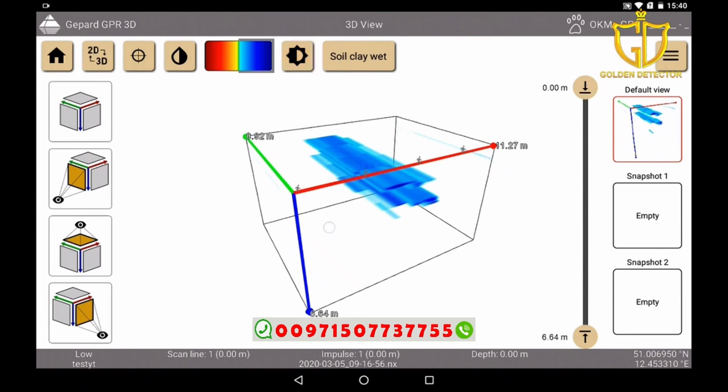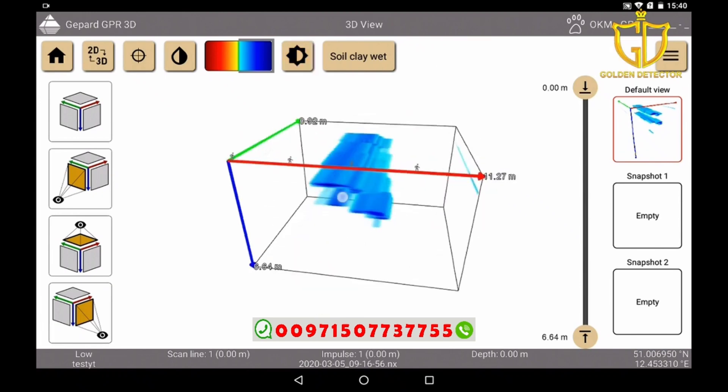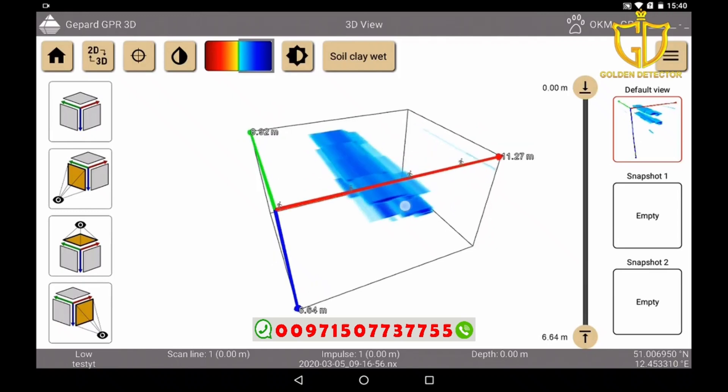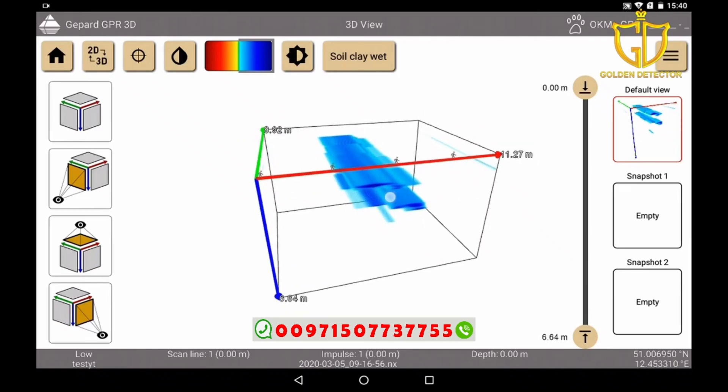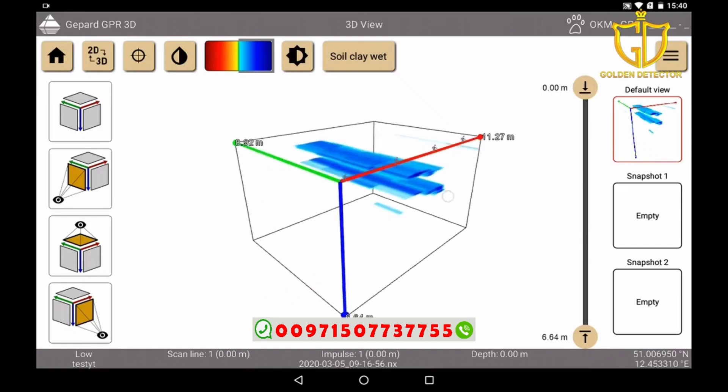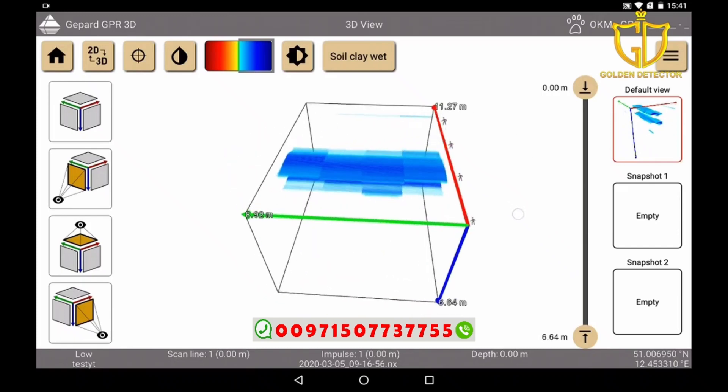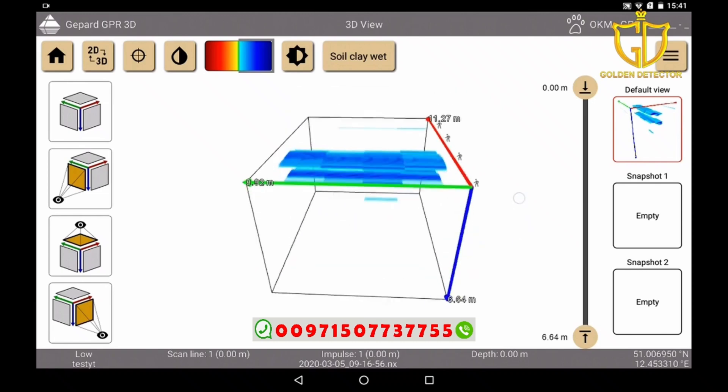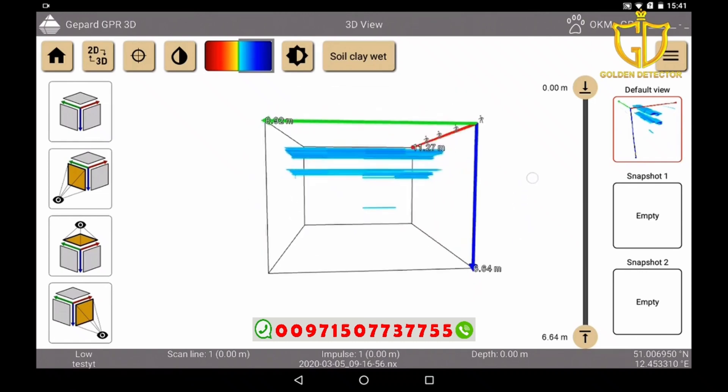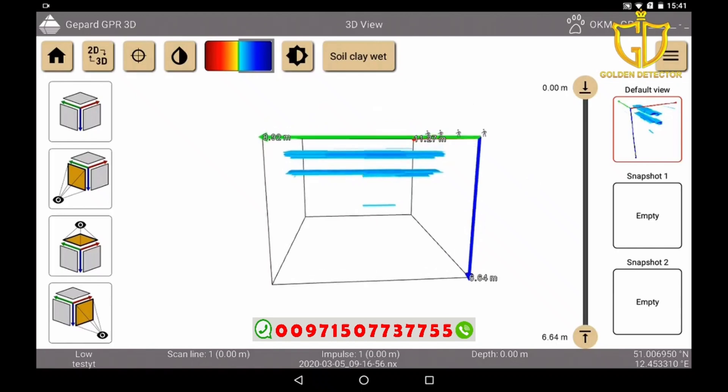We can rotate our image freely and have three coordinate axes for orientation. The red axis is our running direction, starting point at right to the top. Along the green axis our individual measuring lanes are created, starting at the bottom right and moving to the left. The blue axis indicates the depth.